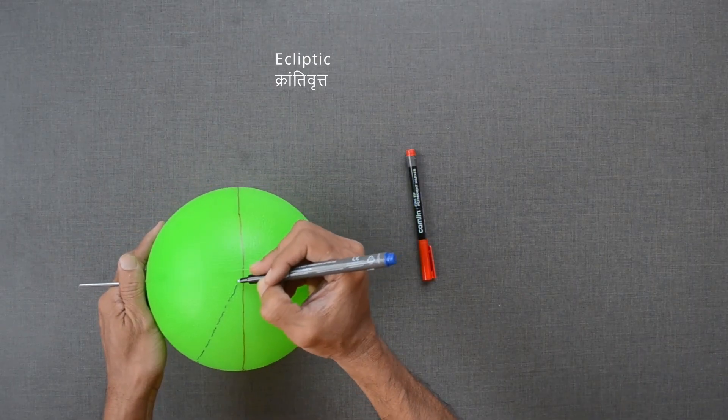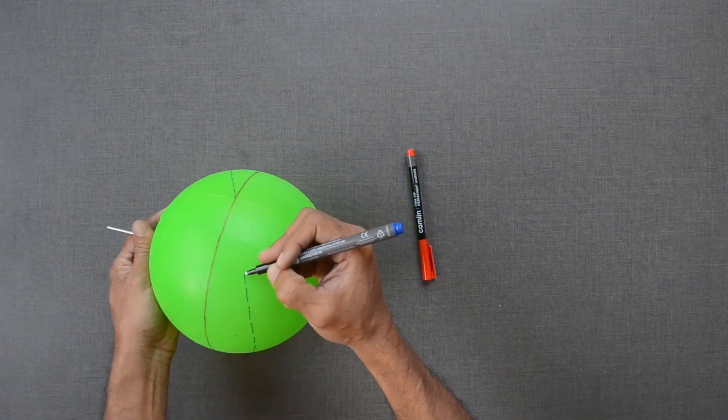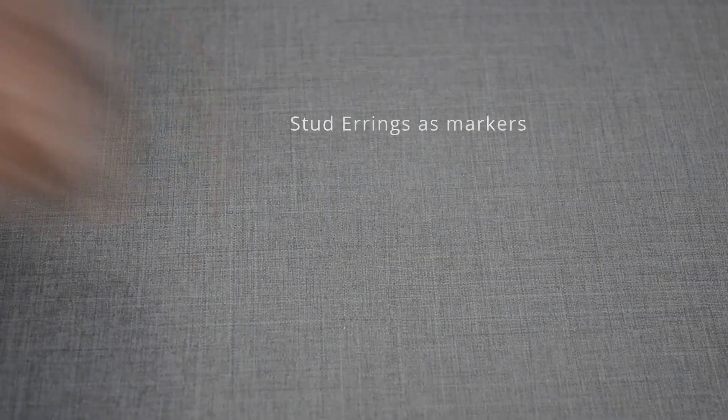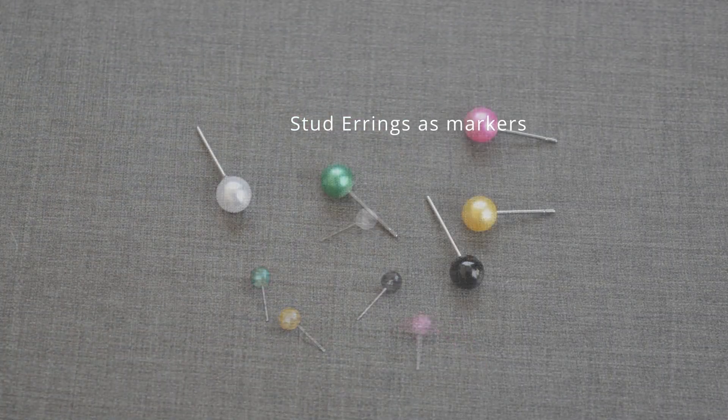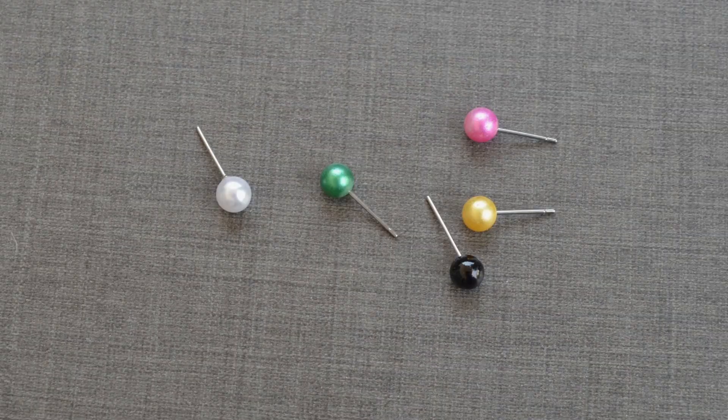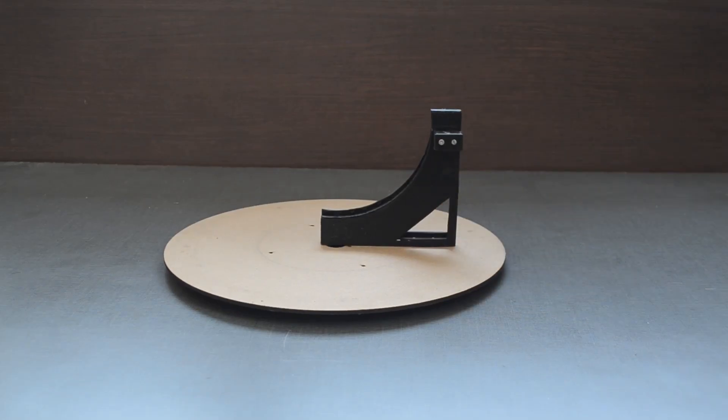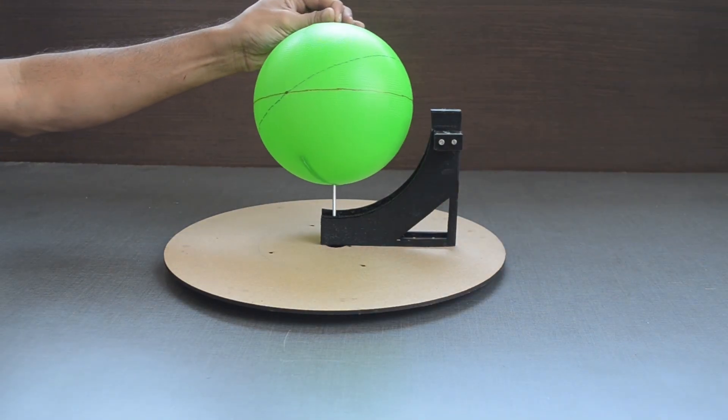We will also tilt the sky, keeping the horizon position constant, to simulate various latitudes on earth. These stud earrings will be used as pointers for the stars, sun and moon. Let us place this celestial sphere on the holder.